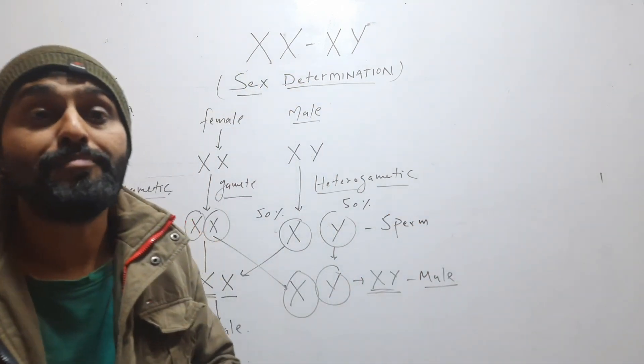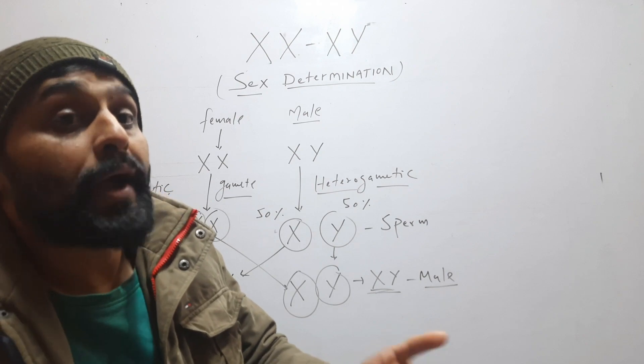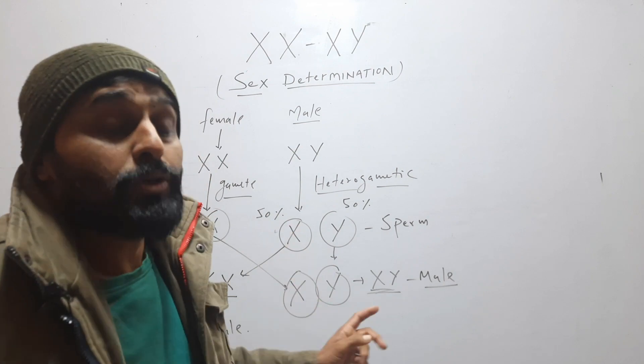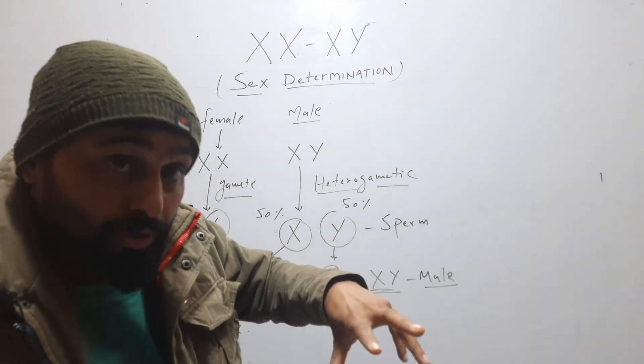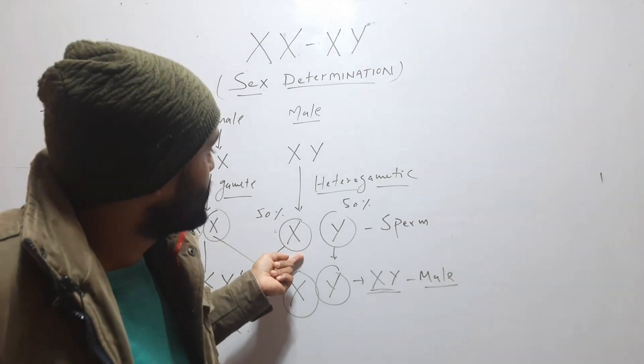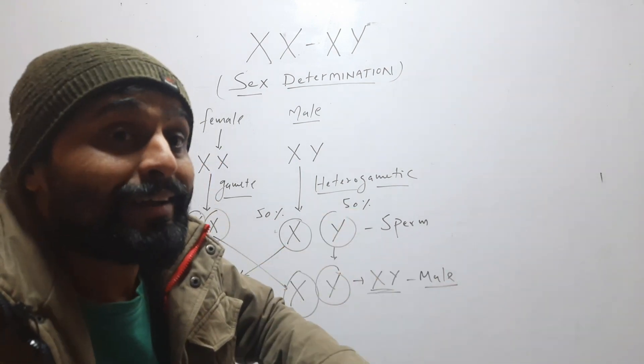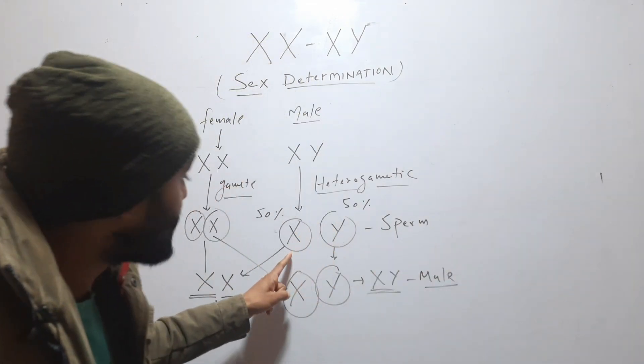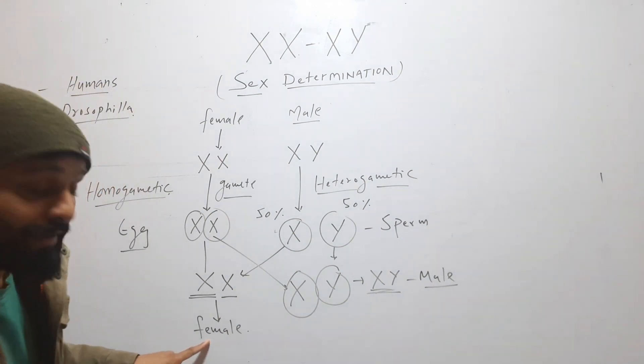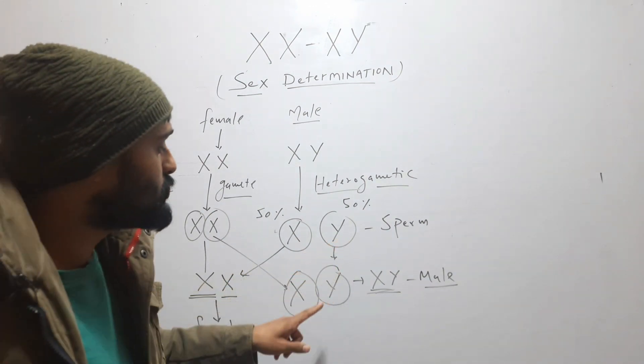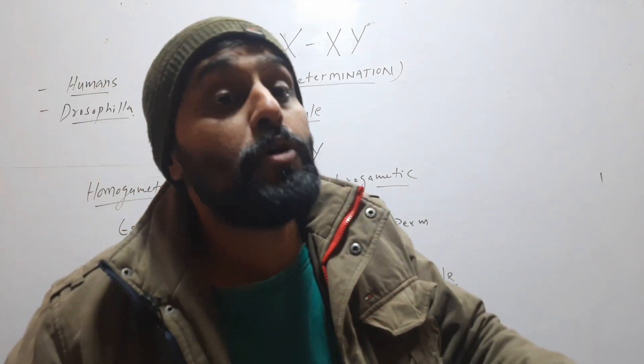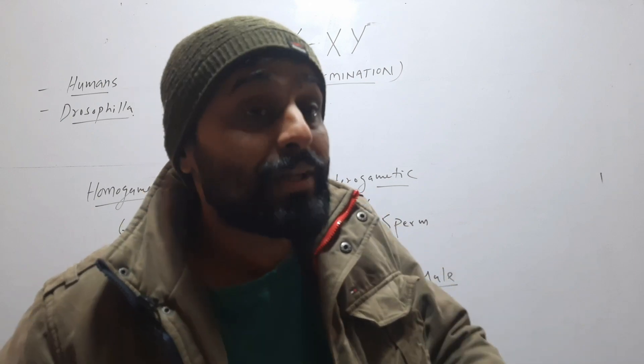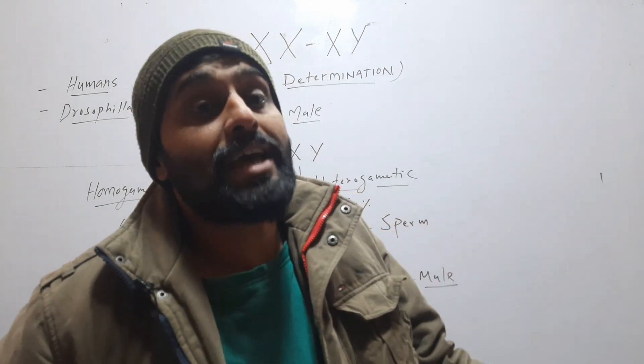The sperm of male are two types. 50% of total human sperms will have X chromosome and 50% have Y chromosome. So the sperm which have X chromosome will give rise to female and which have Y chromosome will give rise to male. So the sperm of male is deciding the sex of organism, not the egg of female, because egg always has X chromosome.